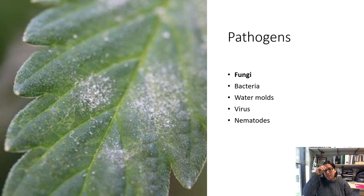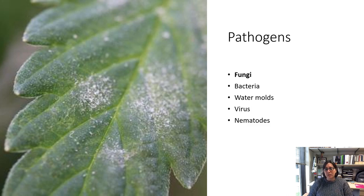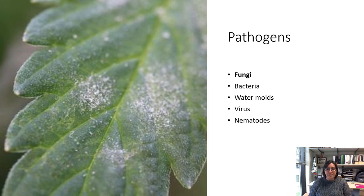In powdery mildew, for example, they produce an asexual spore called conidia — repeating spores that keep producing as long as temperature and moisture are sufficient. Other types of spores, even in powdery mildew, will be produced as the fungus goes into dormancy in wintertime, developing an overwintering structure to protect it from adverse conditions. In spring, a sexual spore will develop, when sexual recombination occurs, initiating infection for the year.